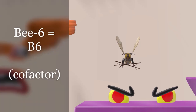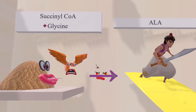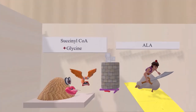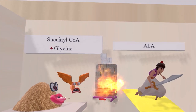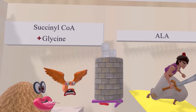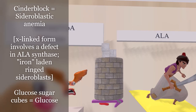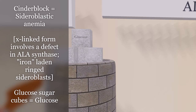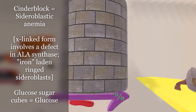Every once in a while, a huge cylinder made of cinder blocks comes down and smashes the syn face. This reminds us of sideroblastic anemia — in X-linked sideroblastic anemia there is a defect in ALA synthase. The cinder block structure is shaped like a cylinder to remind us of what we see under the microscope: iron-laden ringed sideroblasts with Prussian blue staining.